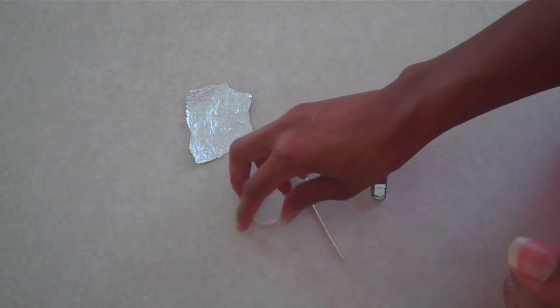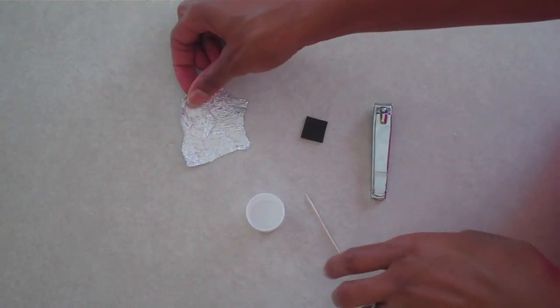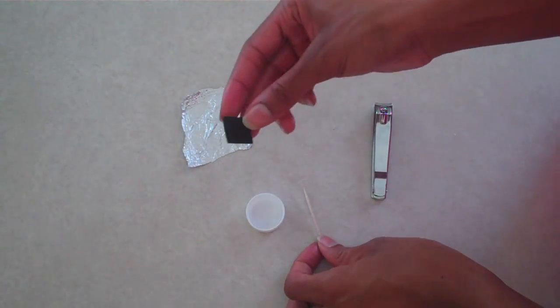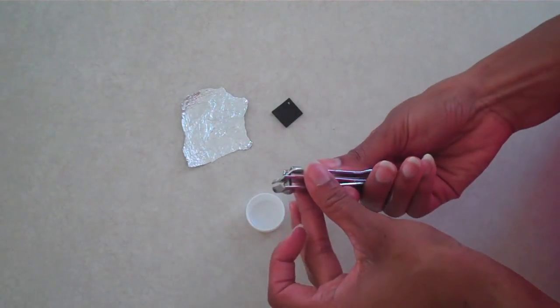I'm going to make a pot using a plastic bottle cap, some aluminum foil, a toothpick, and a small piece of craft foam and some nail clippers.